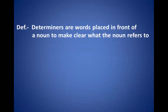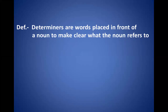What is a determiner? Determiners are words placed in front of a noun to make clear what the noun refers to. You need to understand: determiners are placed in front of a noun because they refer to the noun — to clarify what the noun is and why it is there. The word which qualifies or specifies the noun is called a determiner.